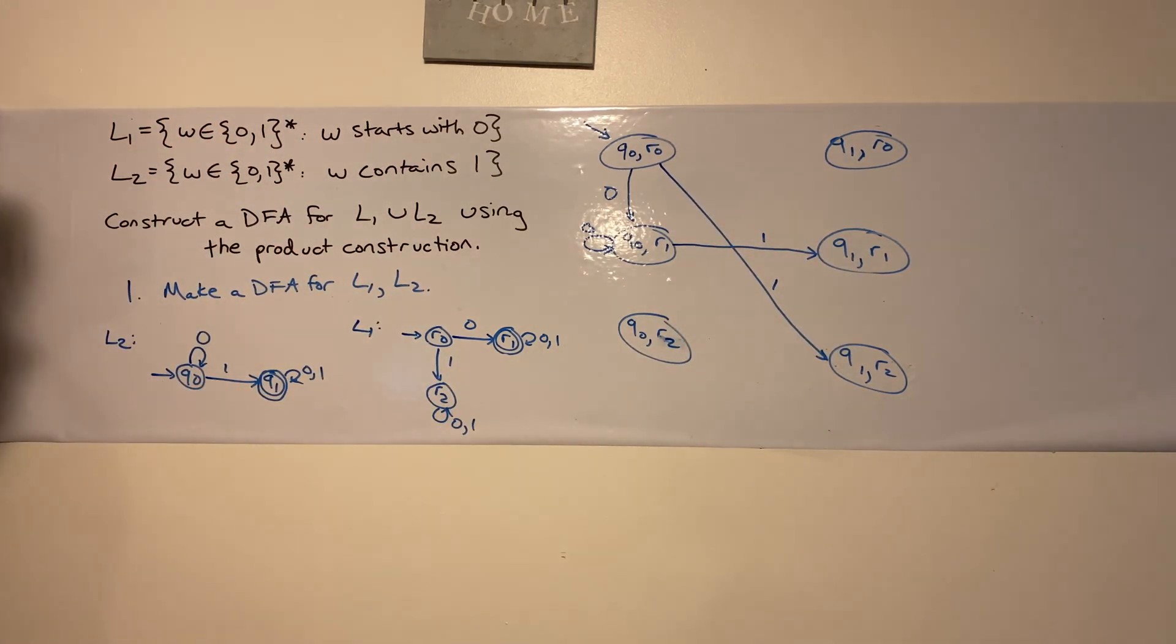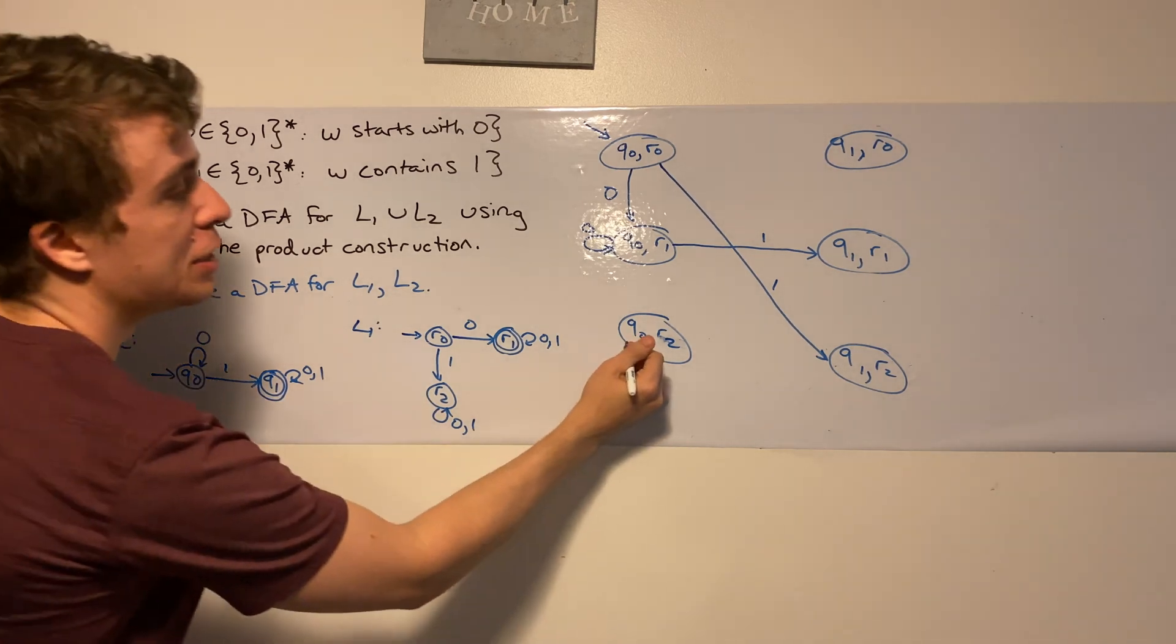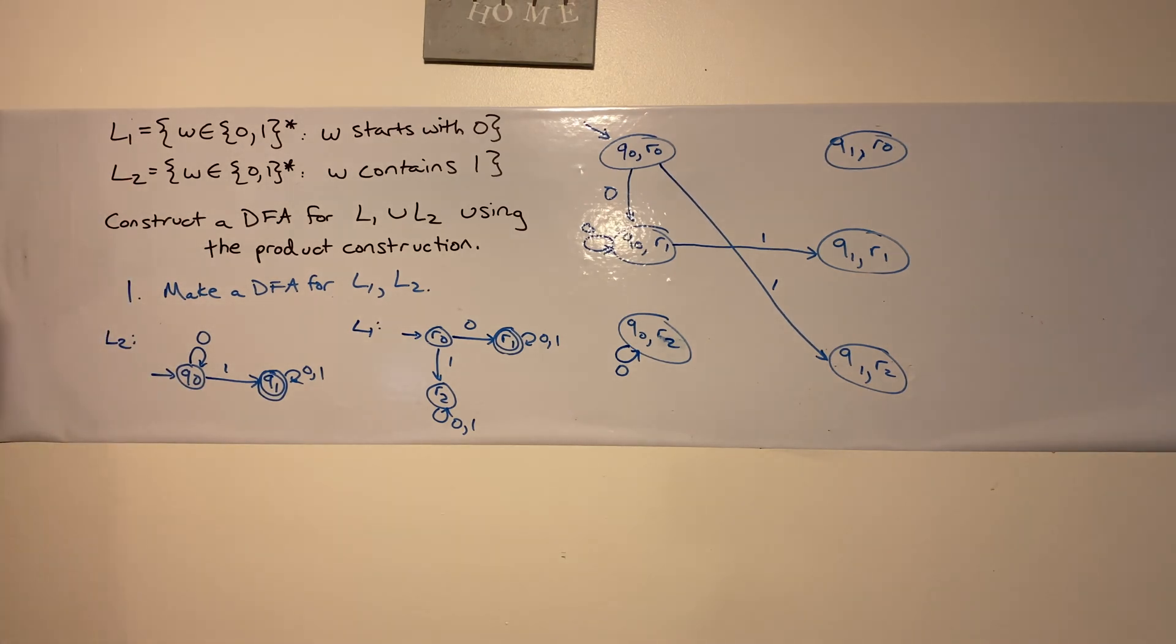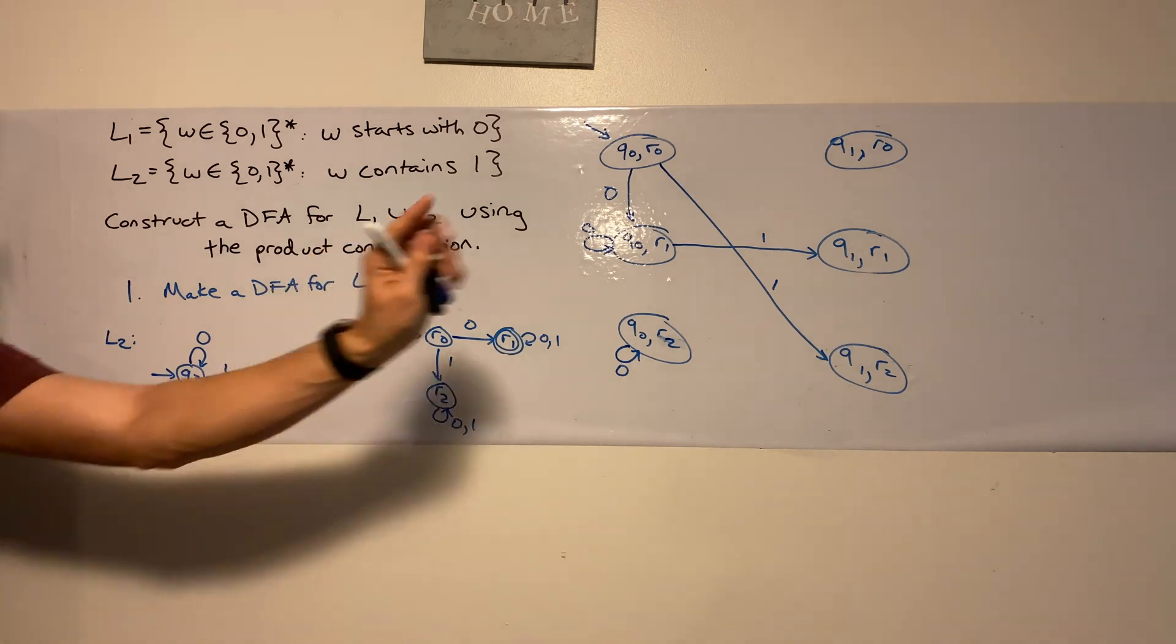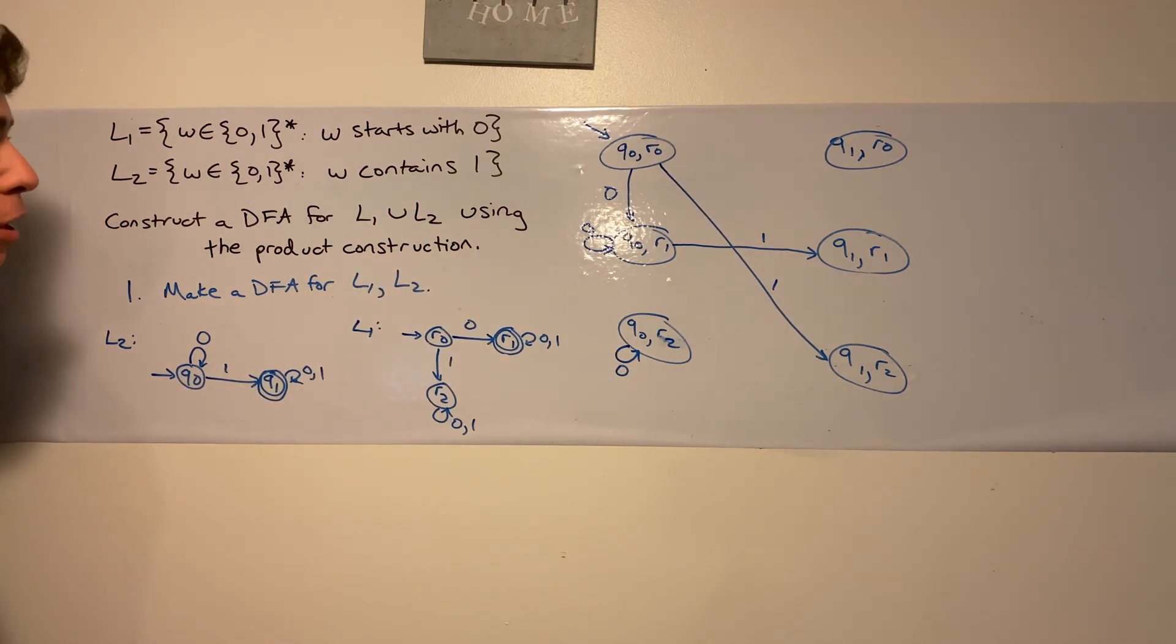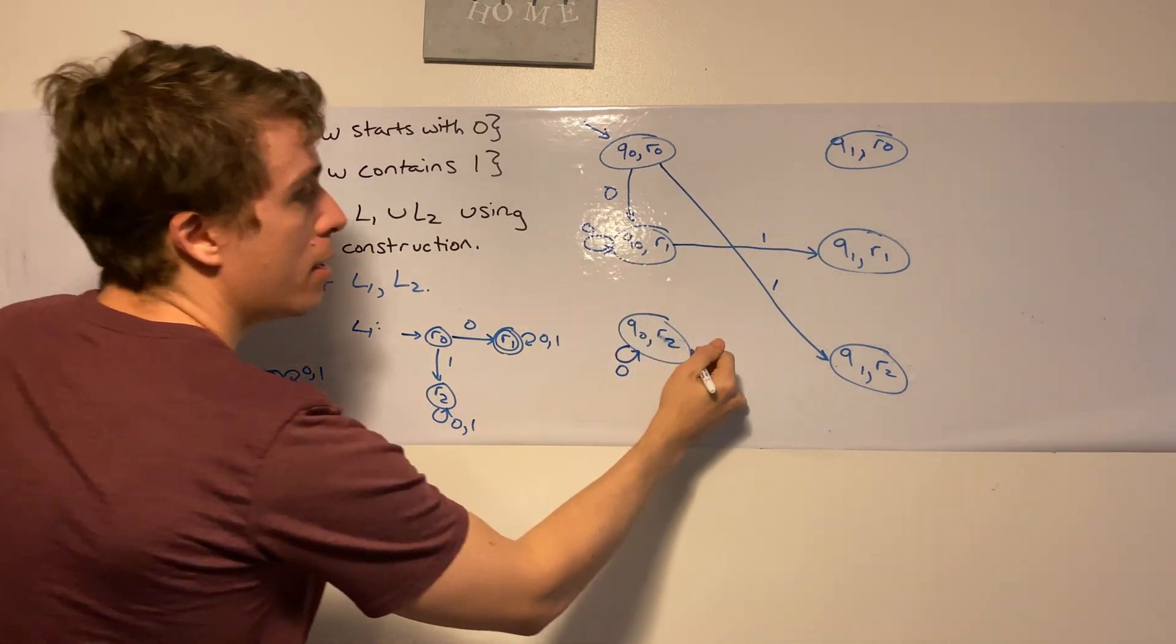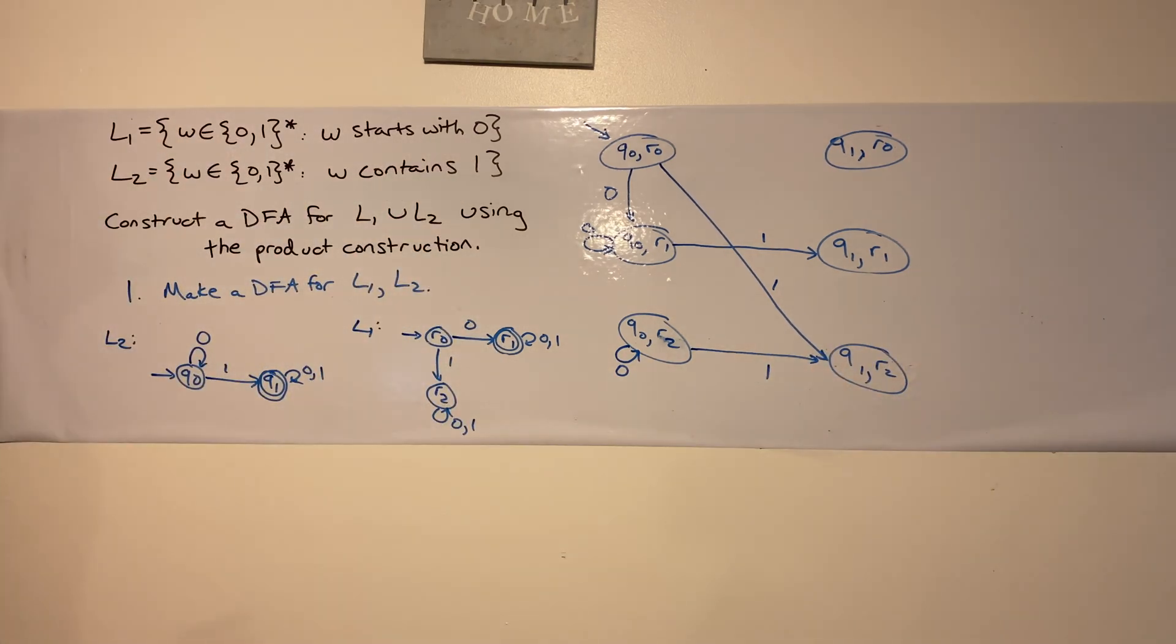Now let's do this bottom one. q0, again, stays in q0. r2 is going to have a self-loop on 0 and 1. So this is going to self-loop on 0. And now let's do transition on 1. q0 goes to the right column again. r2 stays with r2. So like with the other state with r1, I'm going to have a transition that just goes right.